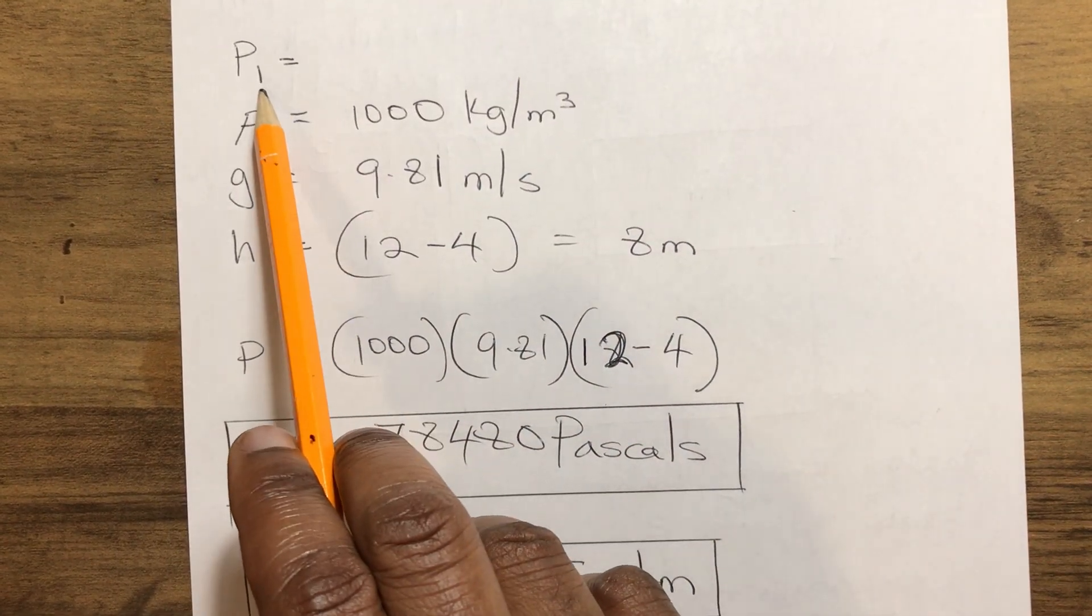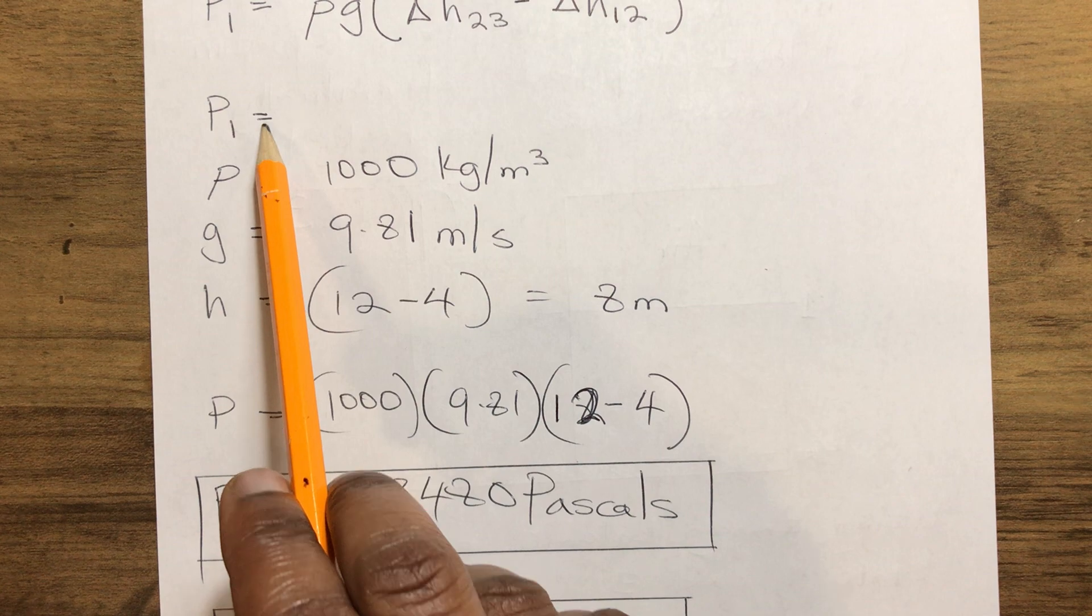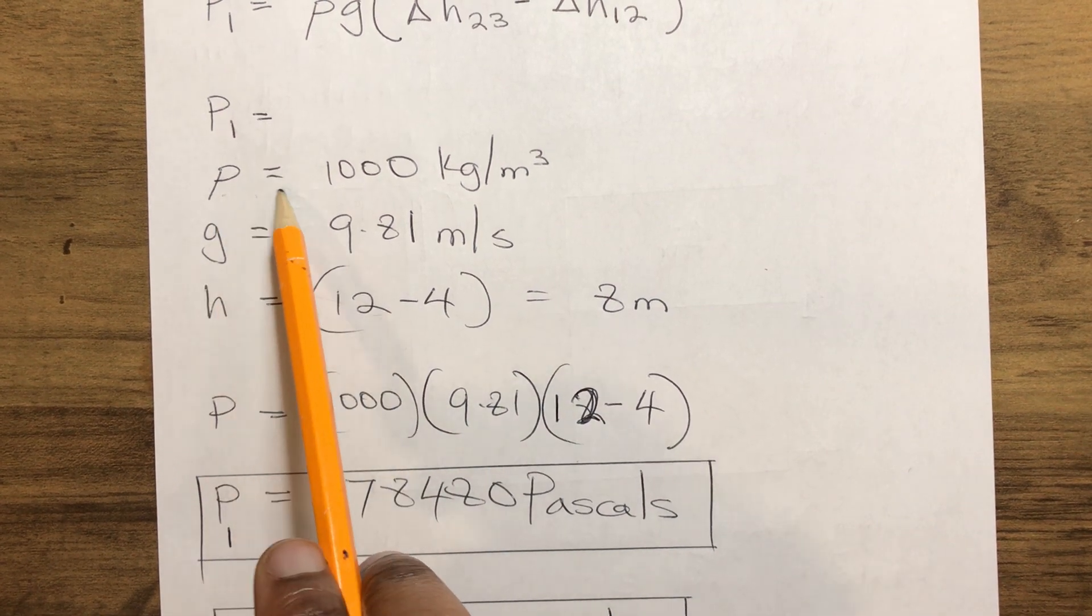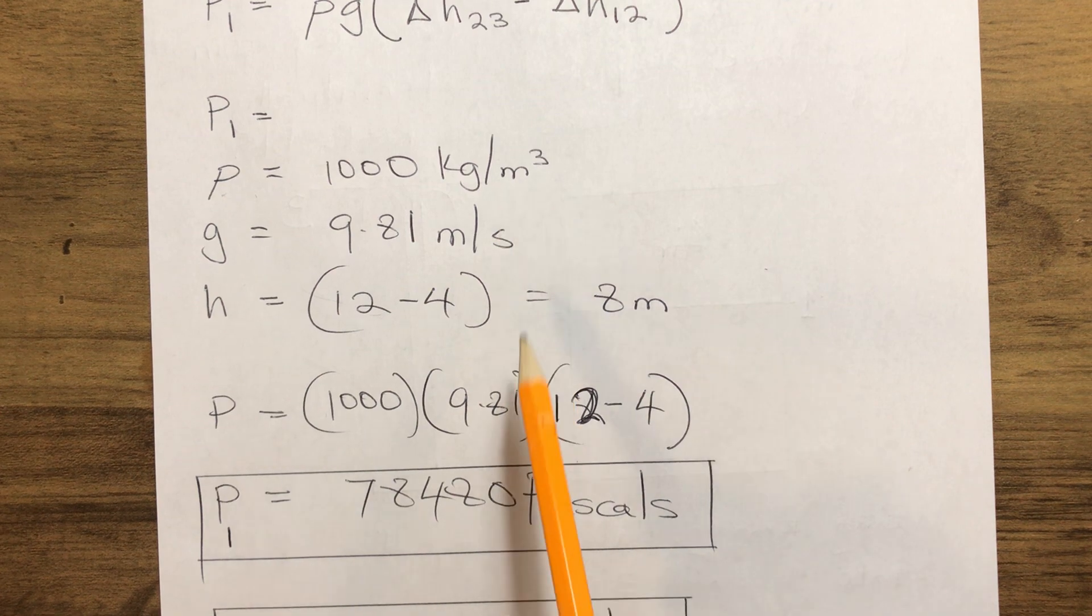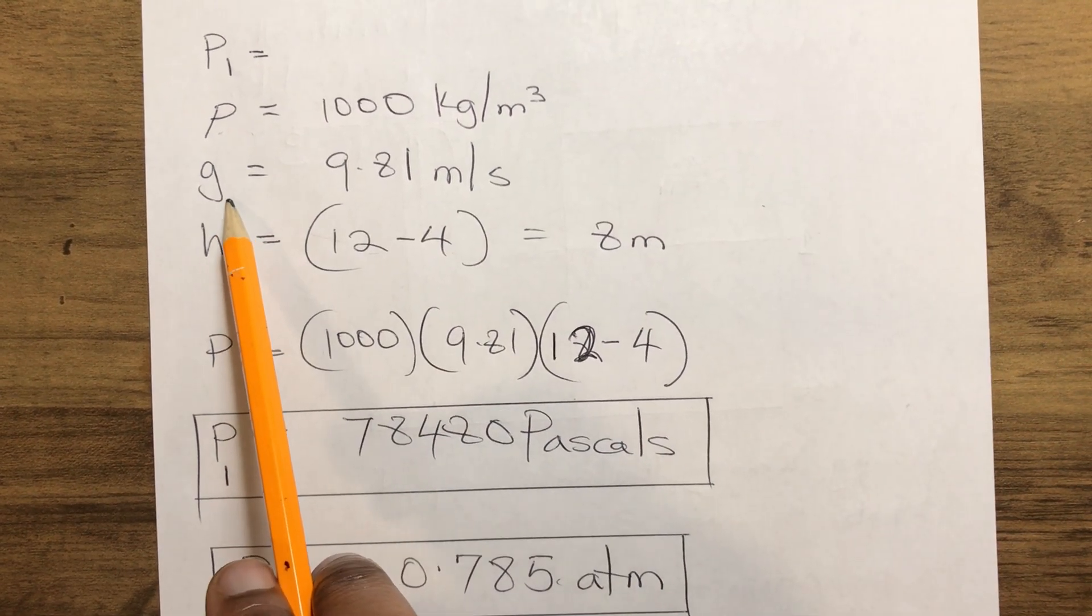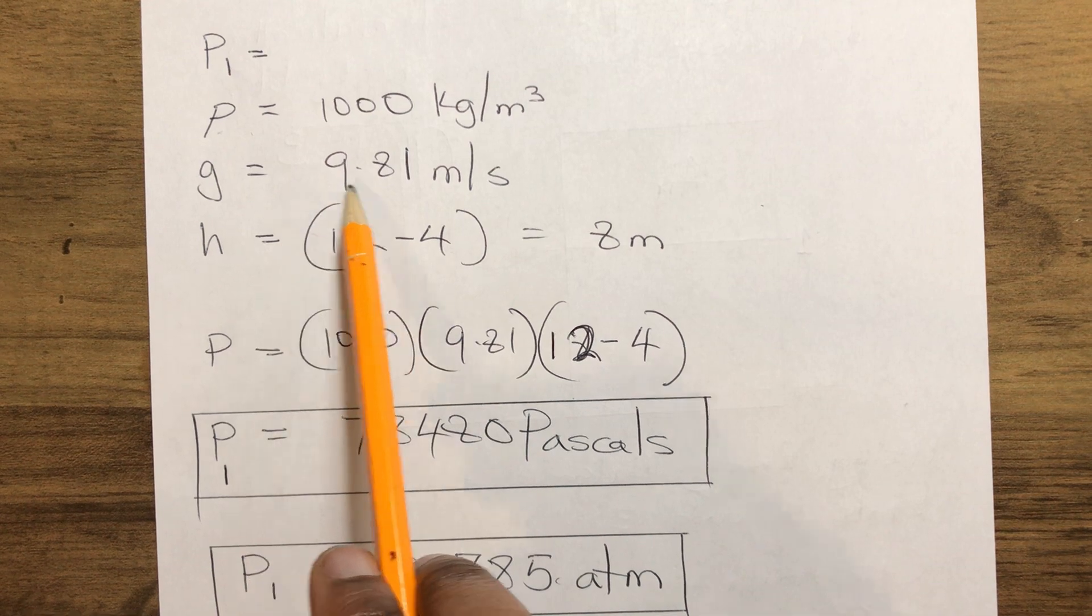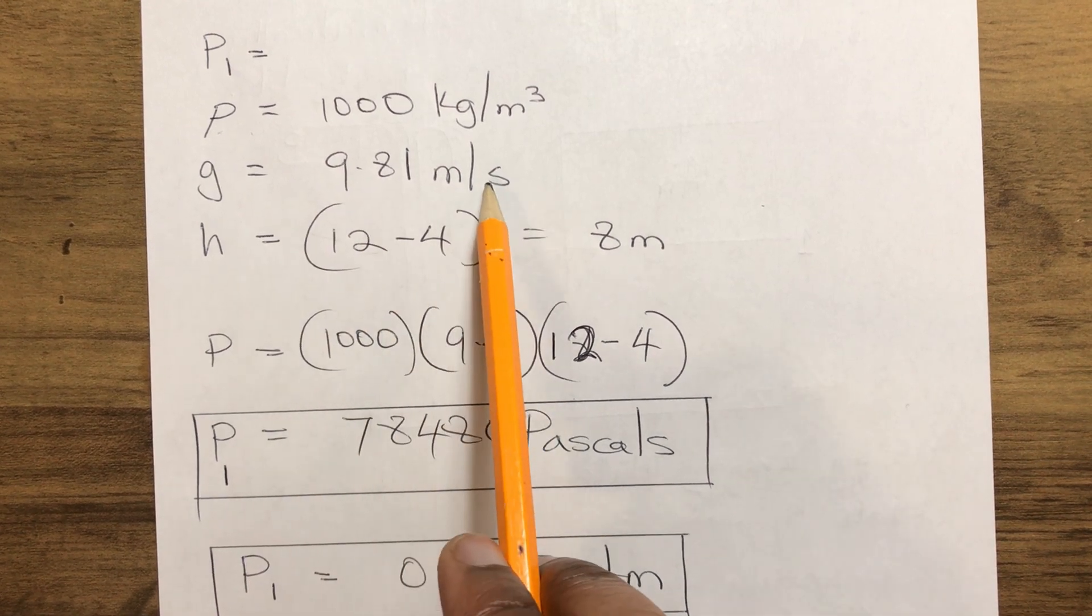Don't let us forget our P1 is what we are supposed to find. Our ρ, which is the density of the water inside the pressurized tank, equals 1000 kg/m³. Our g, which is the acceleration due to gravity, is 9.81 m/s².